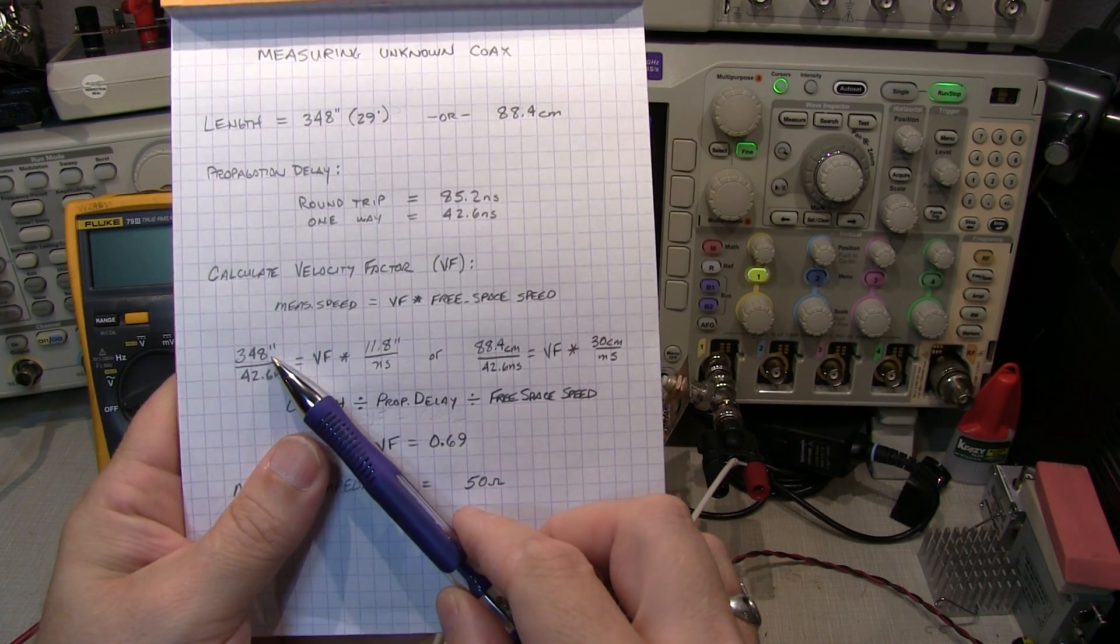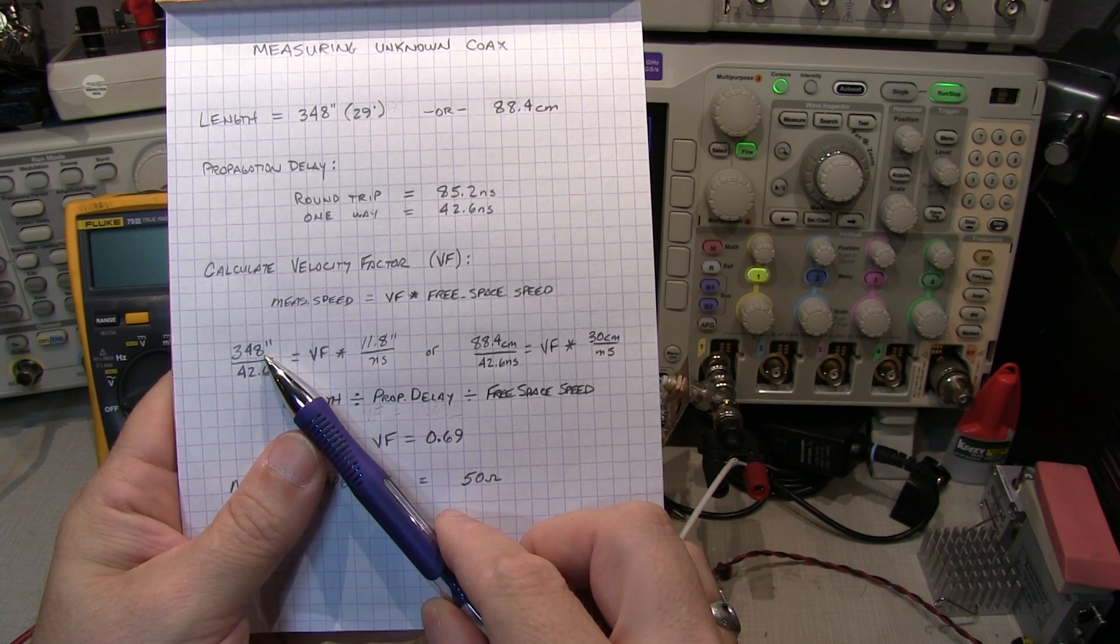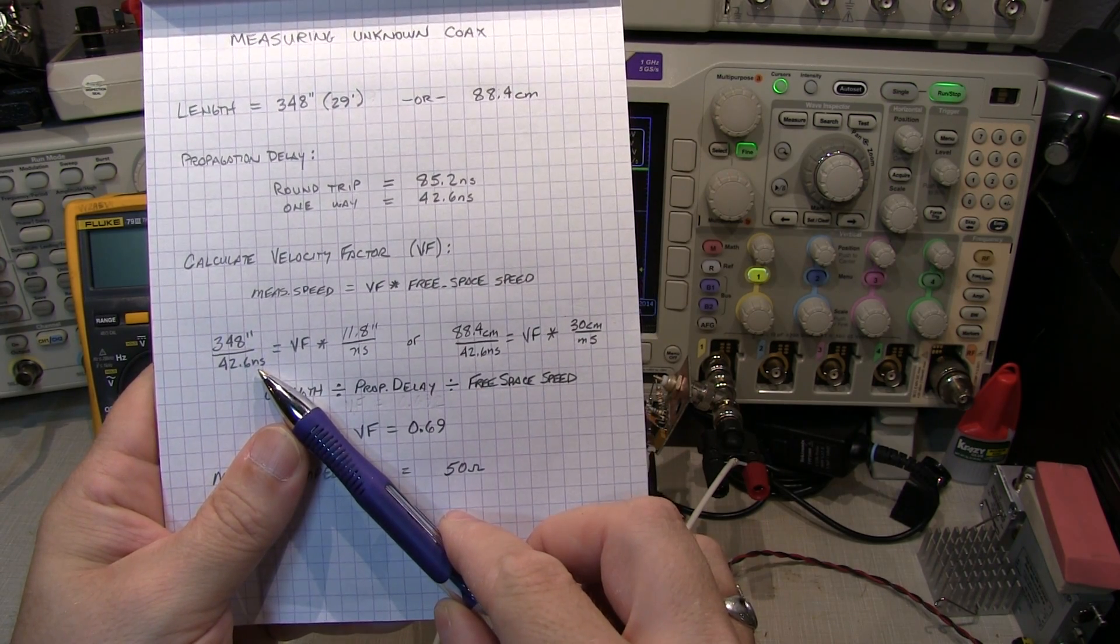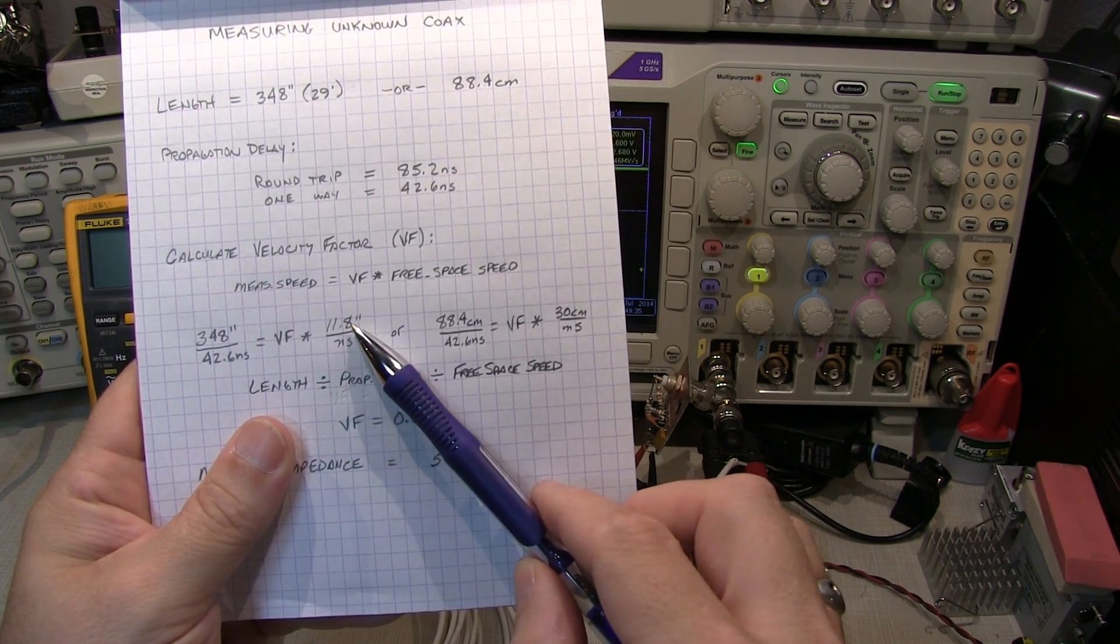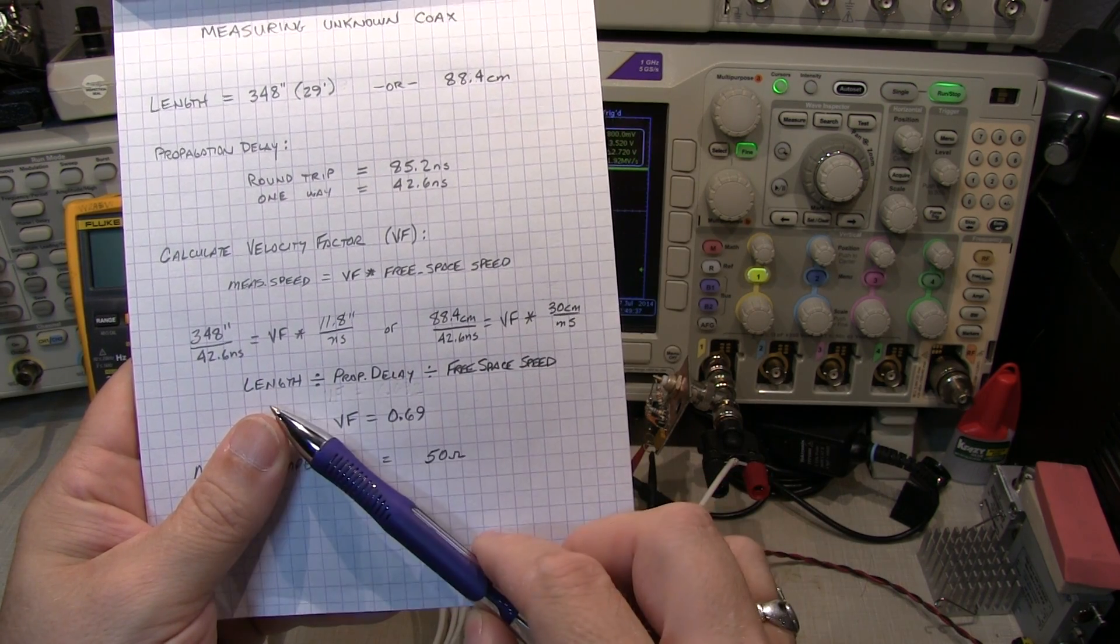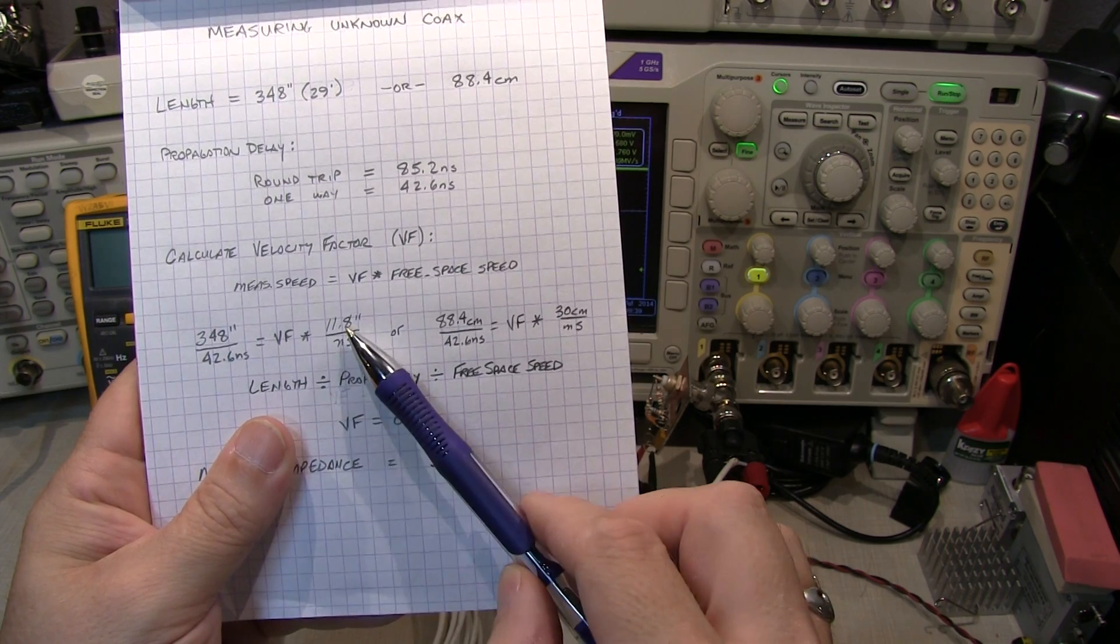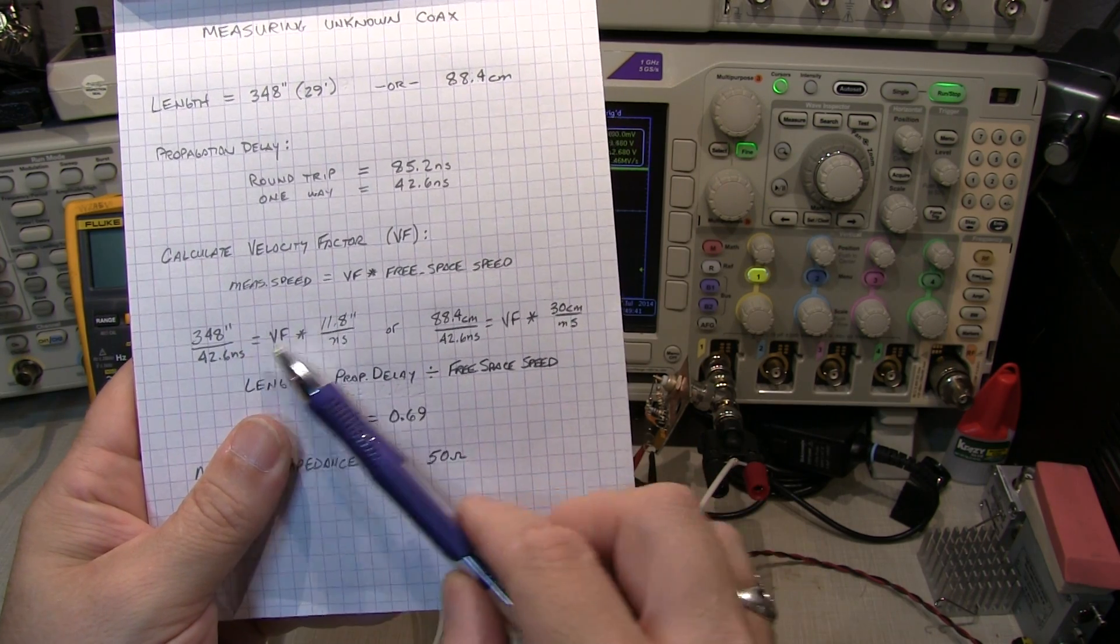I know the measured speed was 348 inches divided by 42.6 nanoseconds. And I know the free space speed of light is 11.8 inches per nanosecond. So we just have the velocity factor there, so I just need to divide this side by 11.8.